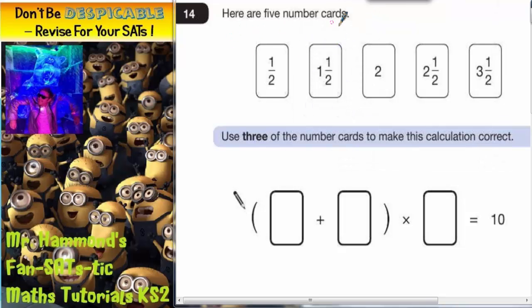Question 14. Here are our five number cards. We've got a half, one and a half, two, two and a half, three and a half. It says use three of the cards to make this calculation correct.